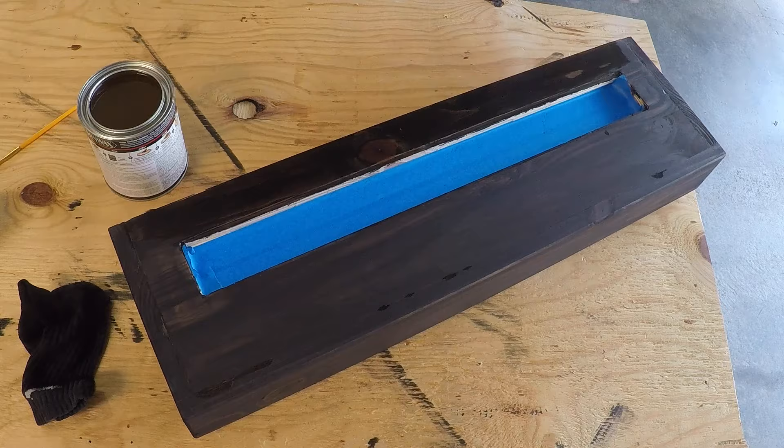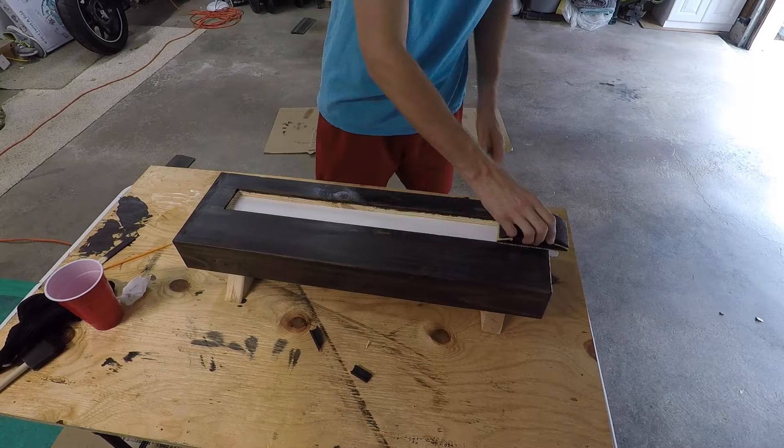So the polyurethane is just going to give it a satin clear coat that will protect it and make it look more professional. So I'll give it one coat of that, and then I will sand and vacuum off the surface and then give it another coat to make it nice and smooth.